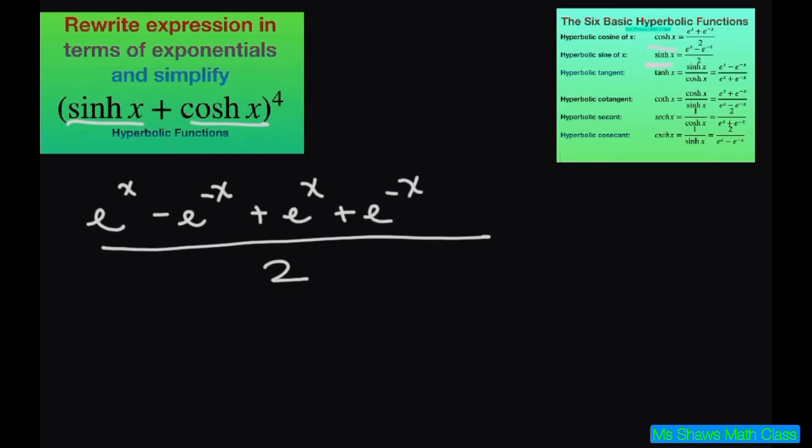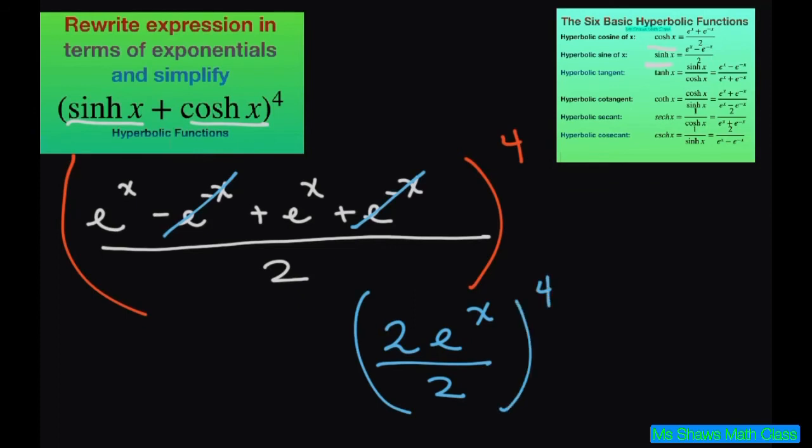And then all of this is squared. Or to the fourth power, sorry. Now let's see what we have here. These two cancel. So basically we have 2e to the power of x divided by 2 raised to the fourth power. Now the 2's cancel. So we have e to the power of x raised to the fourth power.